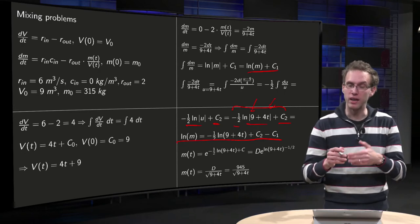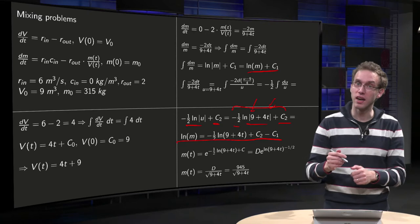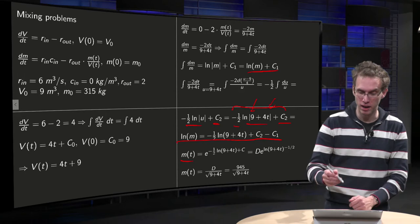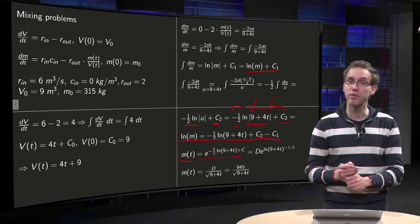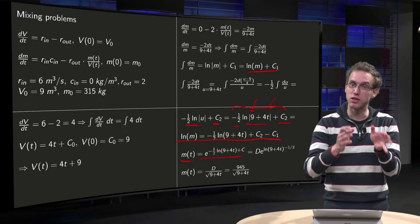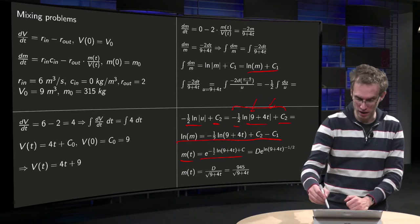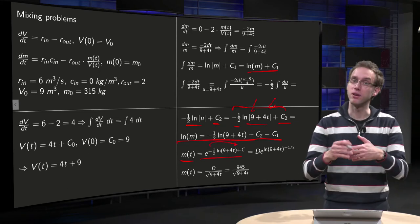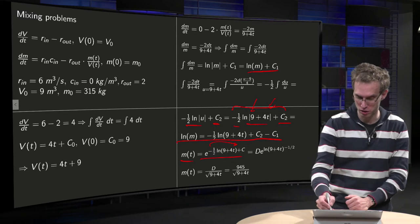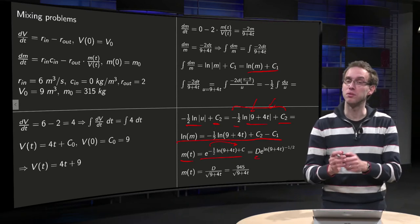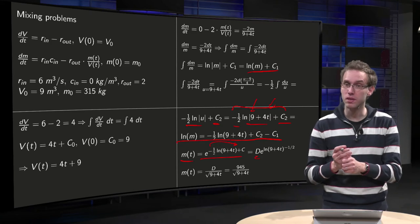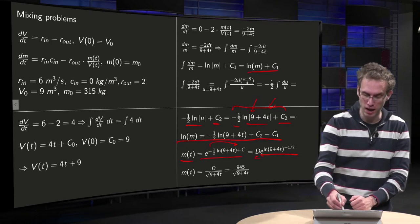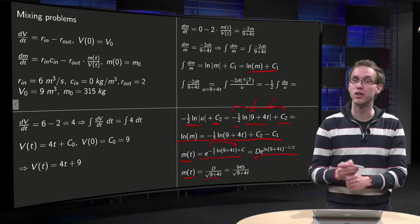And then you can again rename c₂ minus c₁ as c. Take exponential left and right. On the left you get your m of t, and on the right you get this big exponential, which is not so bad, because you get e to the power c times e to the power ln 9 plus 4t, where you put the minus 1 half over there. You can again rename e to the power c to d, some new constant d. And that's really nice because then the exponential and ln cancel each other out.